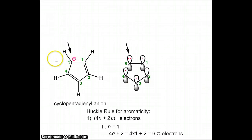This compound is actually cyclopentadienyl anion. I have labeled this carbon as 1, 2, 3, 4, and 5. As you can see, there is a negative charge on carbon 5.